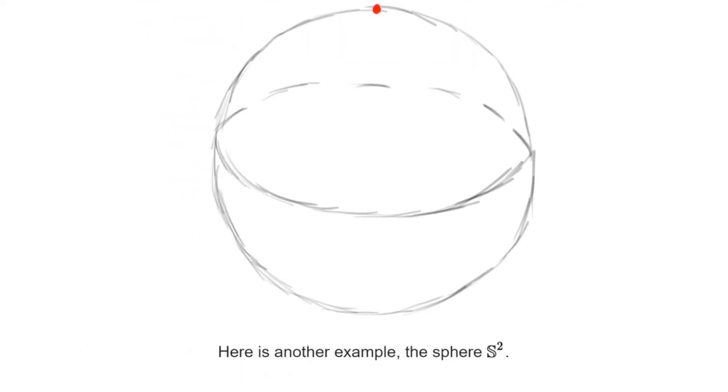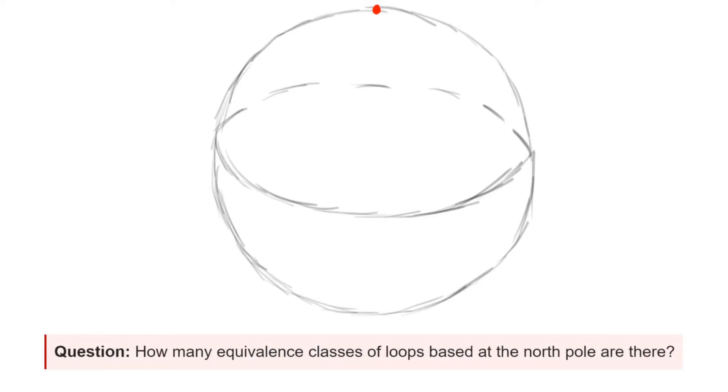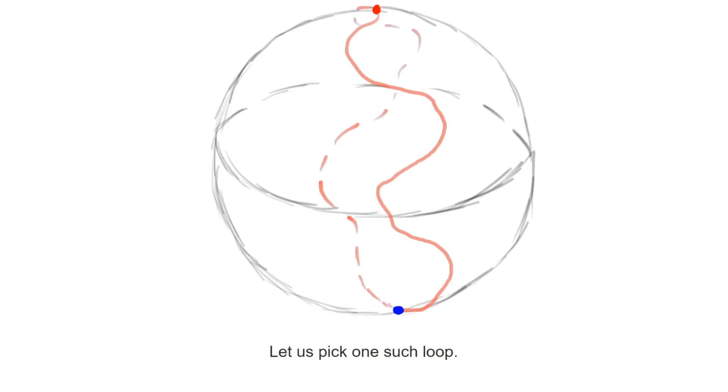Here we see the sphere S2 and we have marked its north pole in red. Mimicking what we did for S1, we will now study loops that begin and end at the north pole. Given such a loop, we want to find the deformation that takes it to the constant loop based on the north pole.